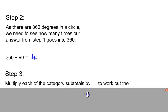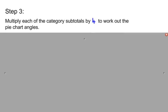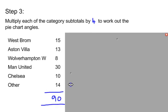Moving on to step 3, we're going to multiply each of those category subtotals by 4, and that's going to give us our pie chart angles. Here are the numbers I gave you in the first place. Can you please multiply each of these numbers by 4? I'll pause the video whilst you do that.